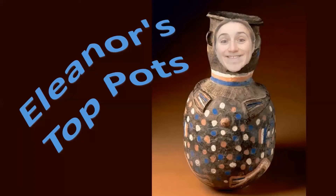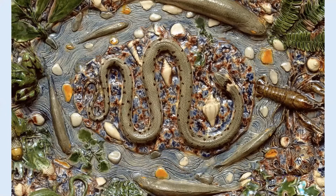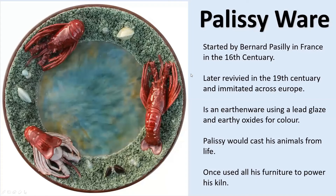Now we're going to look at my favourite pots from around the world. First up is Palissy ware — quite creepy, earthy colours, with different fish, stones, and a big snake. Here's a platter with lobsters, which probably would have been used to serve seafood — you've got these 3D ceramic elements among your food. Palissy ware was started by Bernard Palissy in France in the 16th century, then revived in the 19th century when it got really popular and was imitated across Europe.